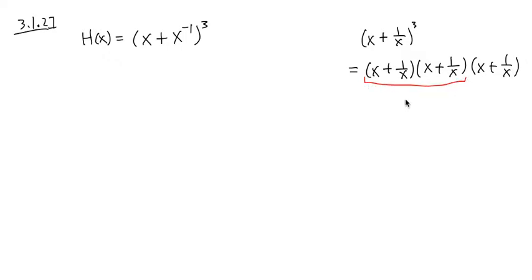Alright, so do this part first. And what are we going to get? It's going to be the next part. When you do x times x, you get x squared. When you get x times 1 over x, the x cancel out, you get plus 1.